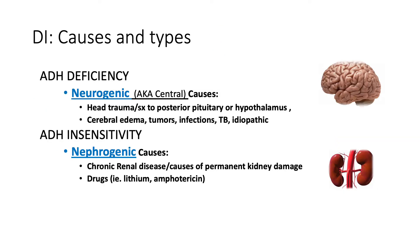If we have a deficiency in ADH — we're not making enough — where is ADH normally made? It's made in the hypothalamus and stored in the posterior pituitary. If we have a deficiency in ADH, we call this neurogenic, or central DI, meaning coming from the brain. Central diabetes insipidus can be caused by brain problems — for example, cerebral edema, tumors, infections in the brain, even tuberculosis that has affected the brain. It can also be idiopathic, where the hypothalamus is not producing enough ADH for unknown reasons.